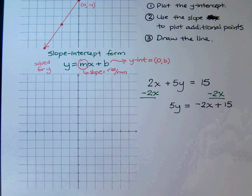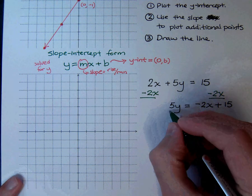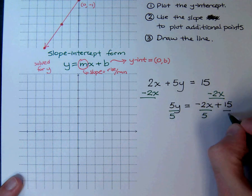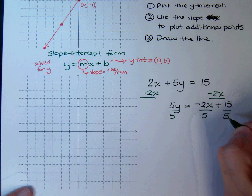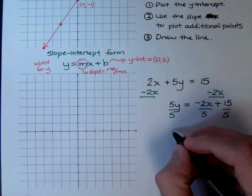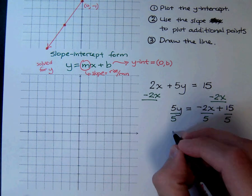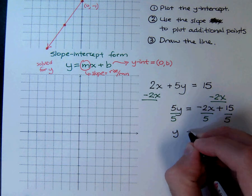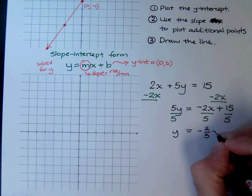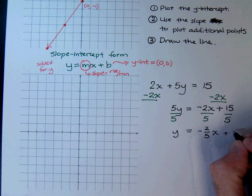Now, to finish solving this for y, divide both sides by 5. And on the right side, we can just divide each term by 5. It's going to be the same thing. So the result of this is that y equals negative 2 fifths x plus 3.